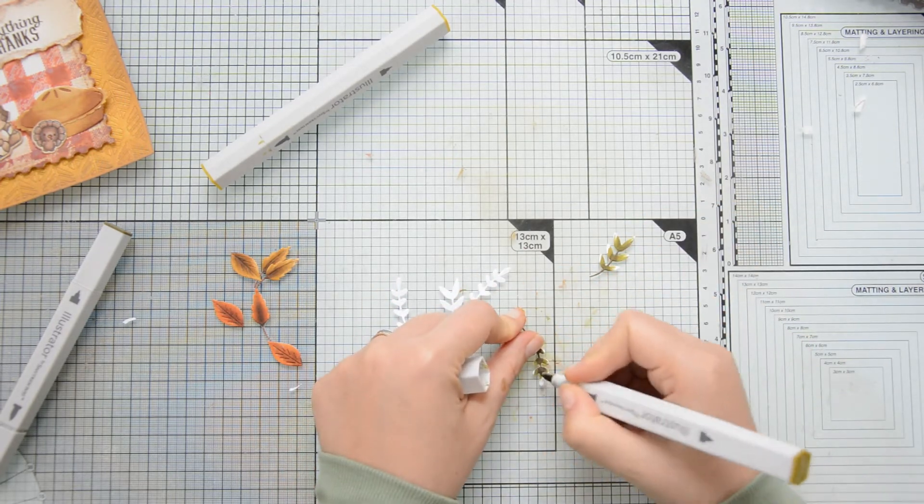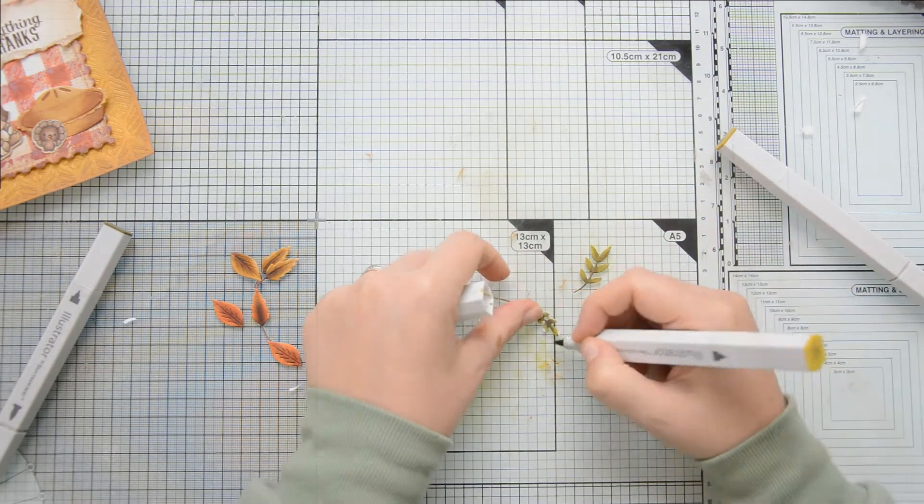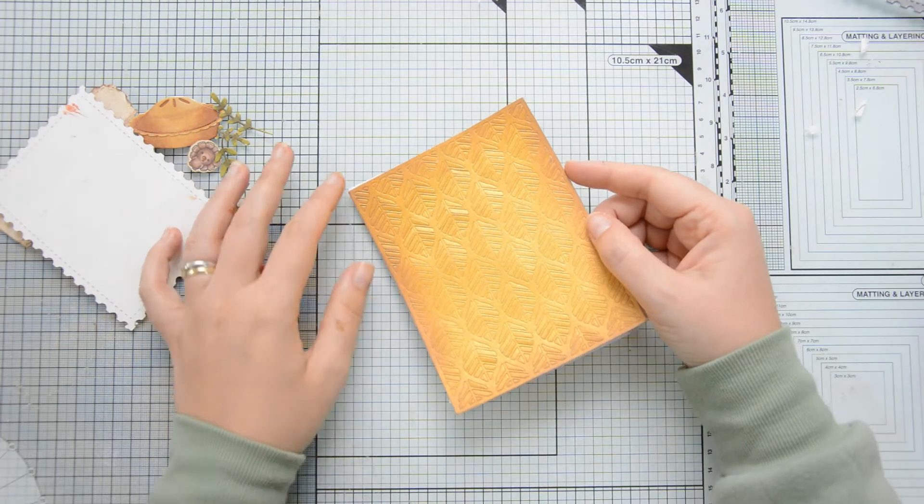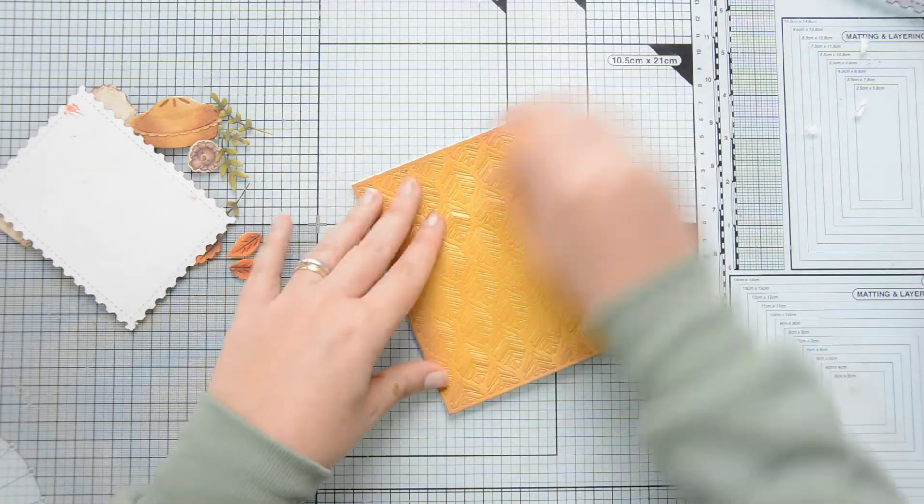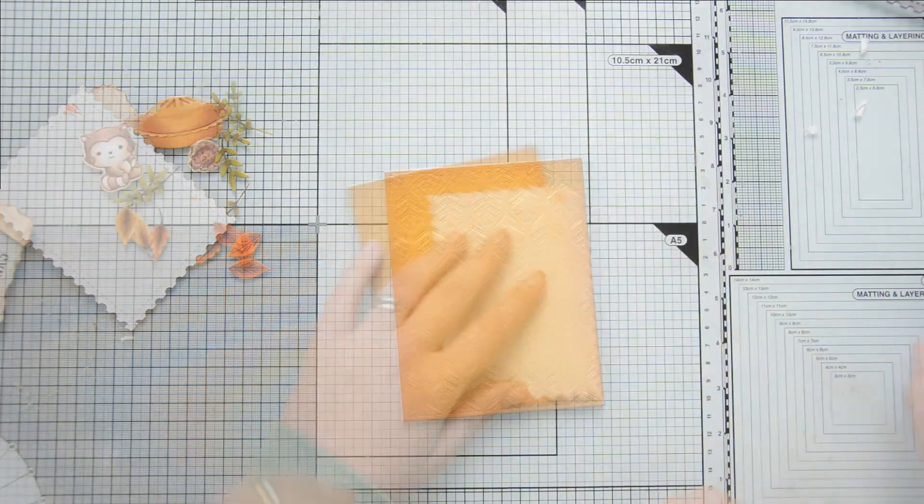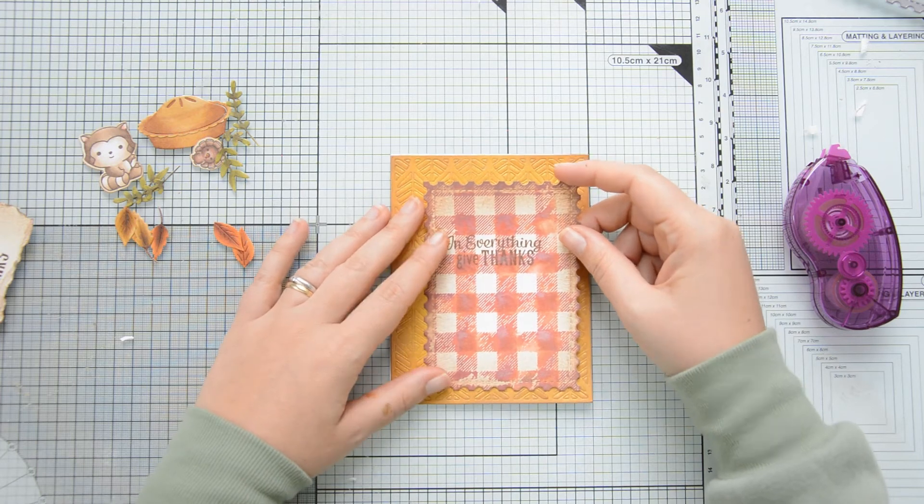And as you can see I'm adding the shadows towards the centers of the leaves and the branches and then I'm blending them out with my mid-tones first and then my highlight markers. At this point everything was ready and I could go ahead and assemble my card. I mounted the background on a top folding A2 card base cut at 4 and a quarter by 11 inches and scored at 5 and a half inches.